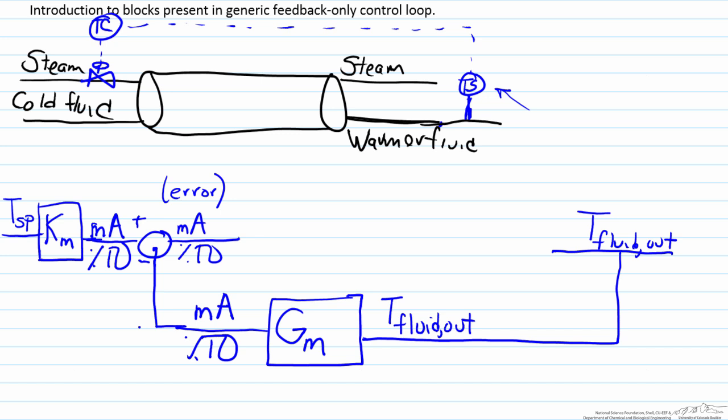If we follow our diagram here, the value of the sensor through this dashed line gets sent to our controller, which is represented as GC. GC will take in that error in percent transmitter output, and will output a signal usually in percent controller output, basically saying this is how active the controller should be.